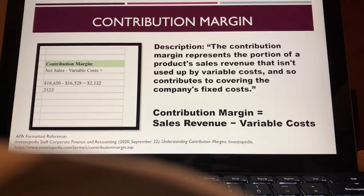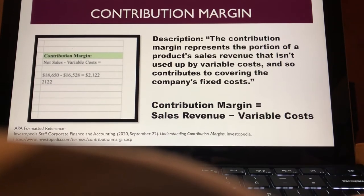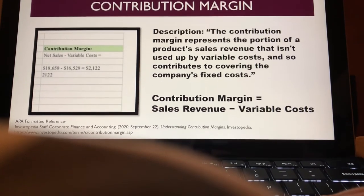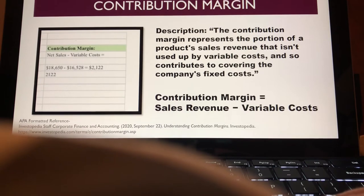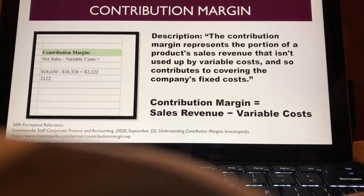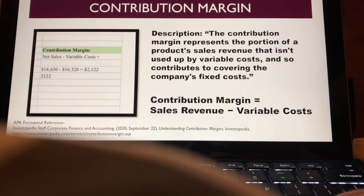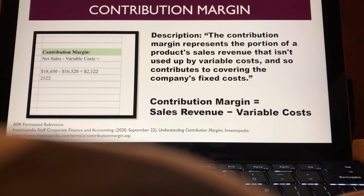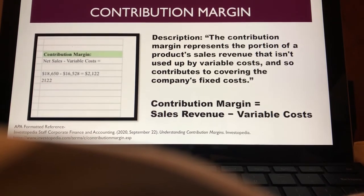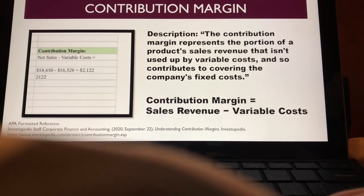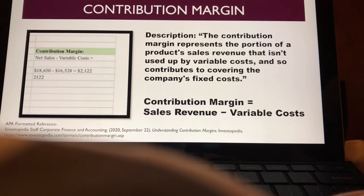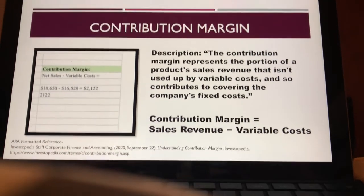Calculating the contribution margin is sales revenue minus variable costs. My contribution margin was $2,122. According to the Investopedia Staff Corporate Finance and Accounting, the contribution margin represents the portion of a product's sales revenue that isn't used up by variable costs and so contributes to covering the company's fixed costs.